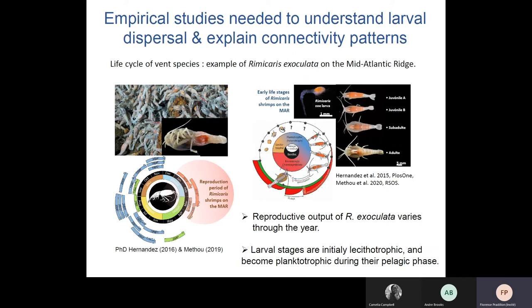I give a first example of the empirical data needed to better understand population connectivity and to help interpretation of connectivity patterns from genetic studies. In our laboratory we study the life cycle of the Rimicaris exocculata shrimp from the mid-Atlantic Ridge, which is the sister species of Rimicaris chacei in the Indian Ocean. Rimicaris exocculata is also very similar to Rimicaris chacei in ecology. Populations of Rimicaris exocculata are not genetically structured, meaning they are expected to disperse widely and exchange many migrants.